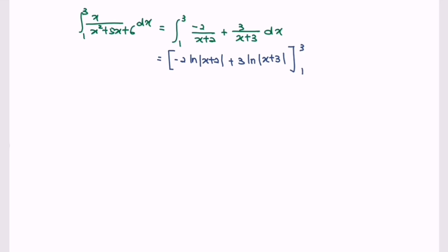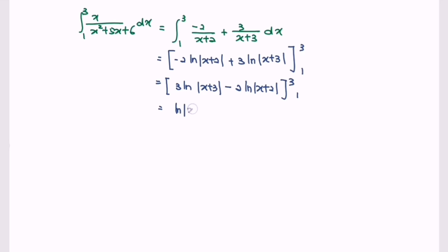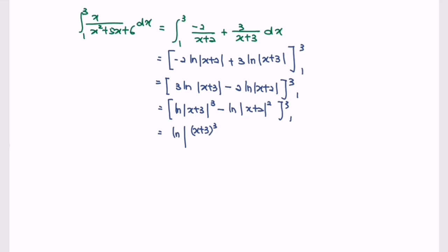Rewrite and simplify the situation. We will have the bracket: 3 ln(x plus 3) minus 2 ln(x plus 2). By using the properties of logarithms, we have ln|x plus 3| to the power of 3 minus ln|x plus 2| to the power of 2. Simplify and we will have ln of (x plus 3)³ over (x plus 2)², evaluated with the limit 3 and 1.